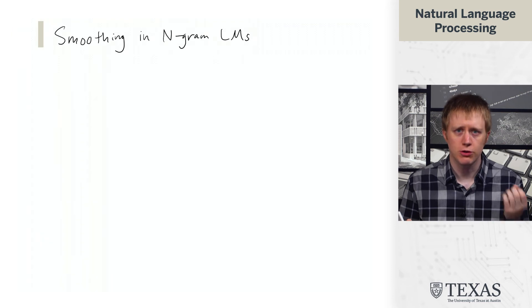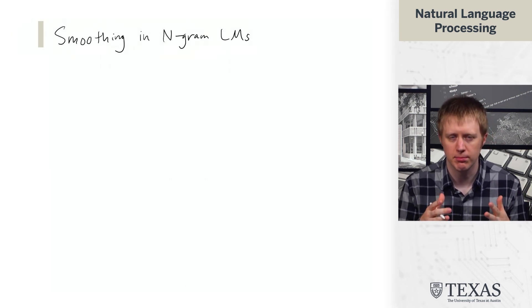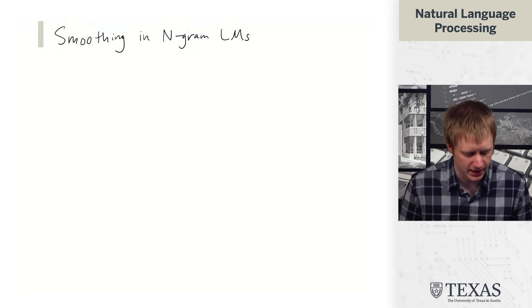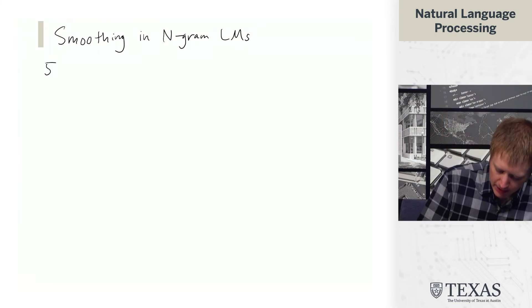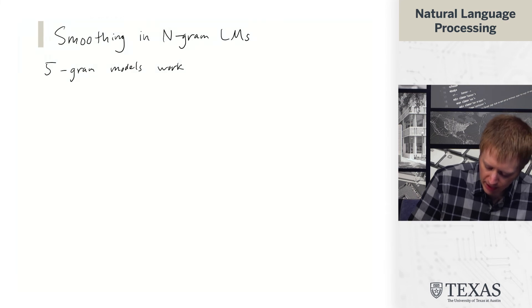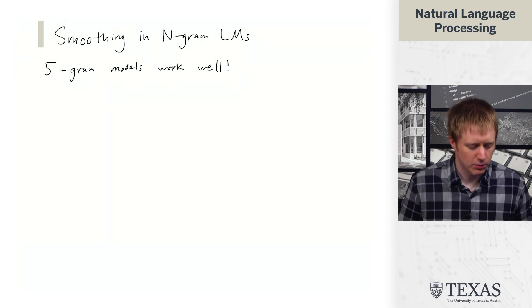And so when we have a 2-gram or a 3-gram model, this can work fine. We can usually see most of the triples of words that make a lot of sense, especially if we have enough data. But actually 5-gram models are more kind of in the range of n that we want. These actually can work pretty well.